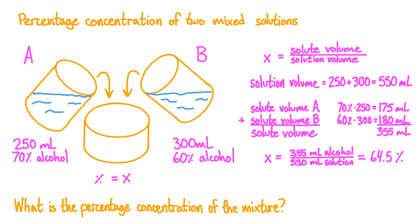Note that our answer, 64.5%, falls in between the two initial concentrations we started with: 60% and 70%. If the calculated percentage concentration of the mixture were somehow higher than the higher concentration or lower than the lower concentration, we would know we had made an error in the calculation. So when mixing these two solutions, the percentage concentration of the mixture is 64.5%.